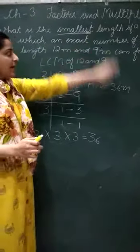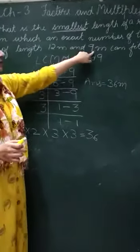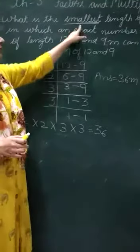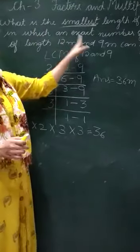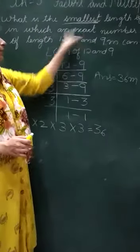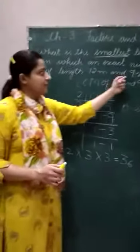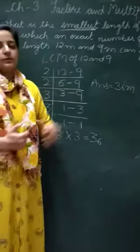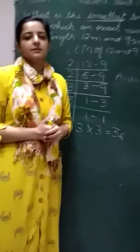Because it is asked what is the smallest length and because the length is expressed in meters so we will express our answer also in meters. So the smallest length of a room in which an exact number of tables of length 12 meter and 9 meter can fit is 36 meter.